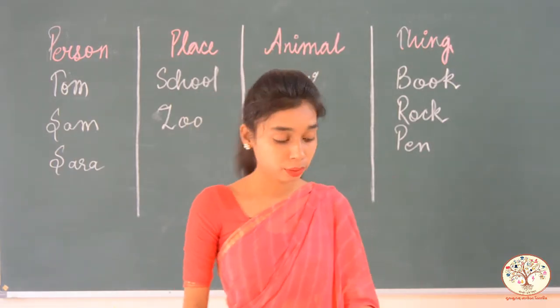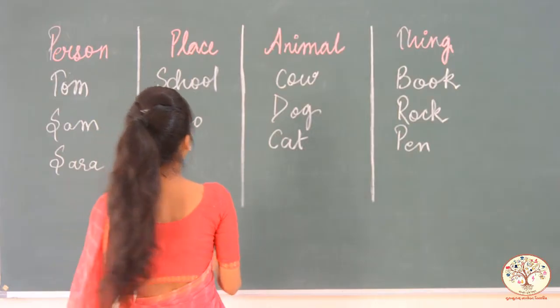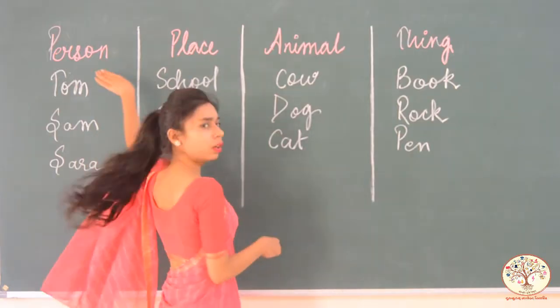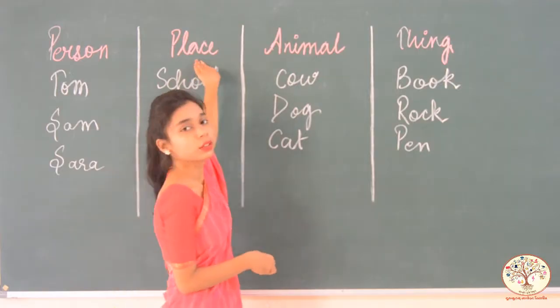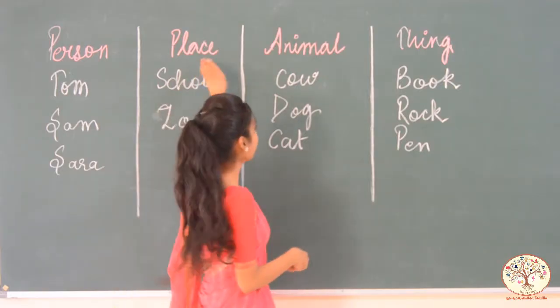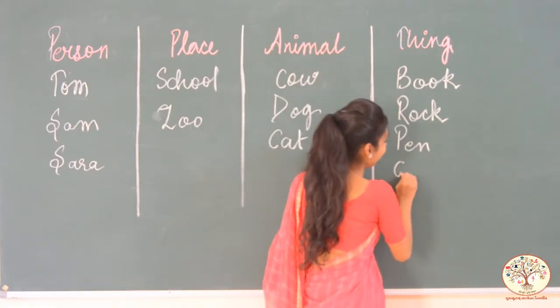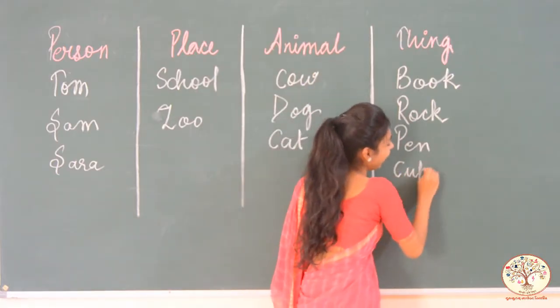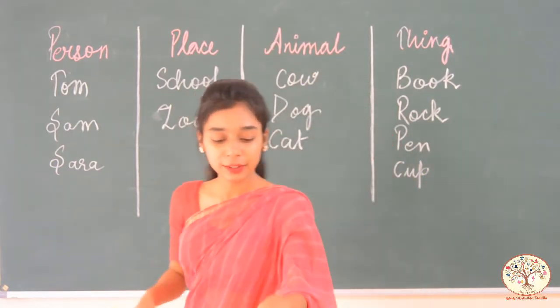Cup. Cup is a name of a person? No. Place? Obviously not. Animal? No. It is a name of a thing. Very good!